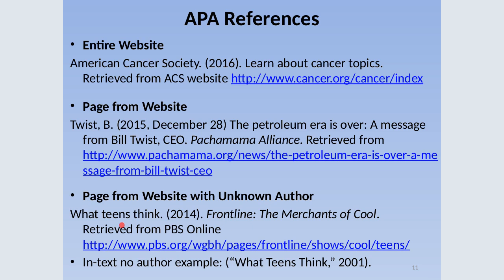Here you can see where we do not have an author. We go ahead and put the page from the website, then our date, and then the name of the website. This also shows what an in-text citation would look like for these — you put quotation marks around the title of your actual page, followed by a comma, close your quotation marks, and then you have your date. Note: one date shown should say 2014.